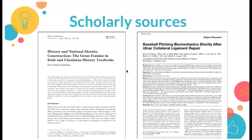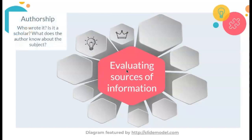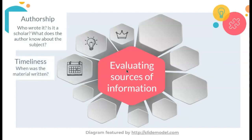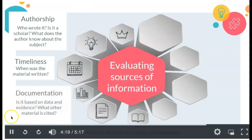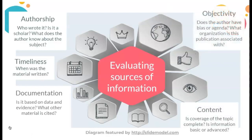Now let's take a look at how you can evaluate the different sources of information you come across, both from the web and from databases. Whether you find a resource on the web or at the library, you want to always take a close look at the article so you can determine its credibility and relevance to your research need. Here are a few things to look out for: Authorship — who is the author and what do they know about the subject? Timeliness — is it recent material, and does your research area require the most current information available? Documentation — what kind of evidence supports their conclusions, and do they cite solid references? Content — is the information basic or advanced, and do they fully cover the topic? And objectivity — can you detect any bias, and was the information created to further knowledge or to state an opinion?